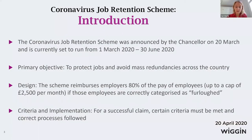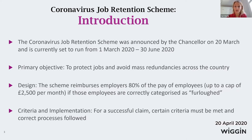Beginning with an overview: the Coronavirus Job Retention Scheme was announced by the Chancellor on the 20th of March. Originally set to run from the 1st of March through to the 31st of May, it has now been extended to the end of June, mirroring the extension of the lockdown period. The primary objective is to protect jobs and avoid mass redundancies across the country as a result of COVID-19 and the lockdown.